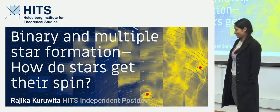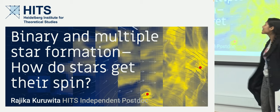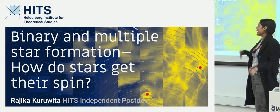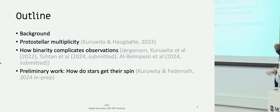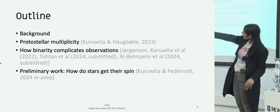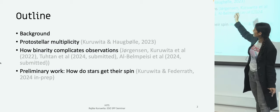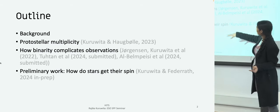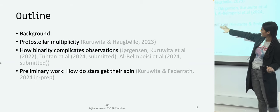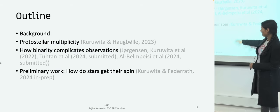I don't really care about the death of stars, which a lot of people at HITS do. I'm more interested in how stars form — particularly binary and multiple stars. I'll talk about my work on how stars get their spin. I'll divide the talk into three sections: background, protostellar multiplicity from a paper accepted this year, how binaries complicate observations, and some work I'm doing right now about how stars get their spin.